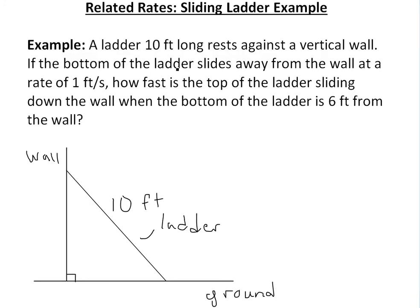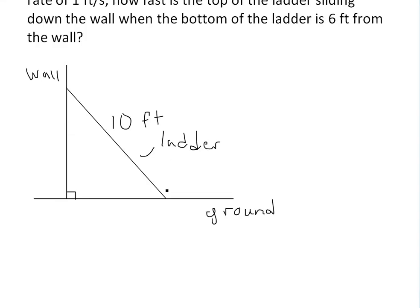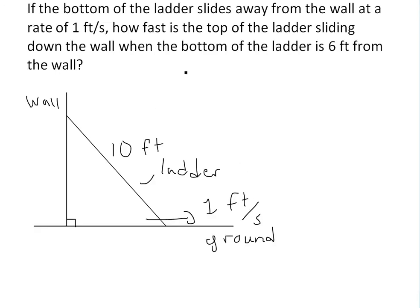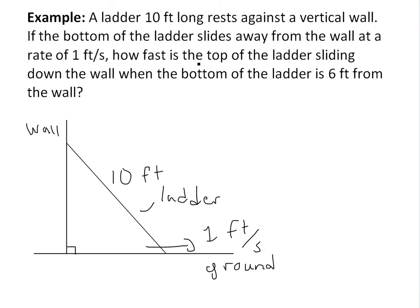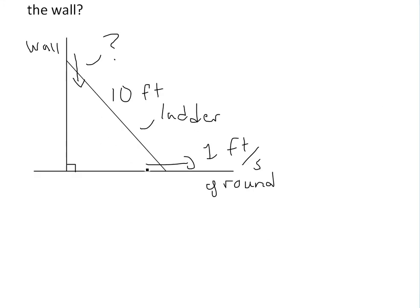If the bottom of the ladder slides away from the wall at 1 foot per second, it's moving at 1 foot per second right here. And how fast is the top of the ladder sliding down, or in this case, what is this rate right here, this sliding down rate, when the bottom of the ladder is 6 feet from the wall? So this is at 6 feet right here.